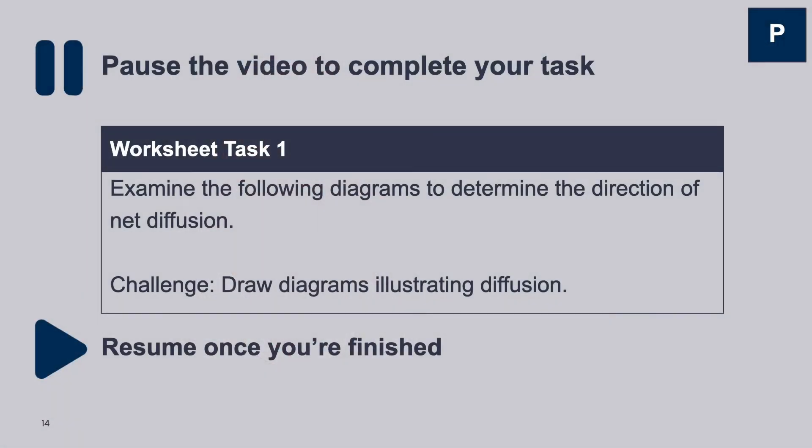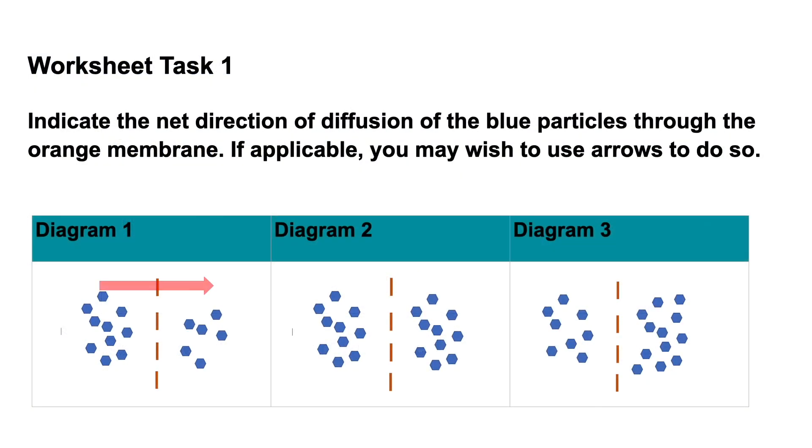For example, in worksheet task 3, students were required to analyse an example of diffusion in a body system, to describe how it occurs and explain the role of certain structural features, by applying knowledge of the factors affecting diffusion. The importance of diffusion in body systems, however, can't be understood without a foundational understanding of what diffusion is. This is assessed through the Checks for Understanding, which assess an understanding of diffusion as passive, and then worksheet task 1, in which students need to identify the direction and amount of particle movement in various scenarios. I made sure students could demonstrate their knowledge through these Checks for Understanding and tasks, before moving on to more complex concepts, and getting students to demonstrate their understanding of these.